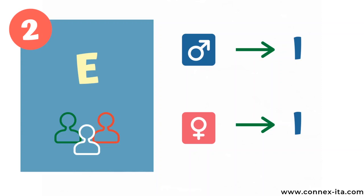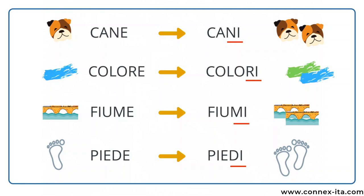Let's see now the nouns that end with the vowel E. These are very easy, because in the plural you always replace the E with an I, no matter the gender. So for instance, cane is 'the dog' and becomes cani in the plural. Colore means 'color', and in the plural is colori. Then fiumi is the plural form of fiume, which means 'river'. And last example, piede is 'the foot', but 'feet' is piedi. Cani, colori, fiumi, piedi.